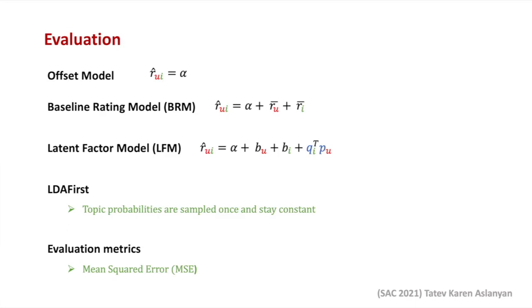Having defined the proposed algorithm, we also need ways to evaluate its performance. Firstly, we are interested in the prediction accuracy of the proposed model, and we use the mean-squared error for this. To be able to judge the performance of the proposed algorithm, we compared it to four other baseline recommender algorithms. The first baseline model is the offset model, where the ratings are predicted by taking the global average over all ratings. The second model that we use for comparison purposes is the baseline rating model. The third one is the standard LFM, the latent factor model, which we have seen before and discussed in detail as part of the proposed algorithm. The fourth and final model that we use to compare it to the proposed algorithm is the LDA first.